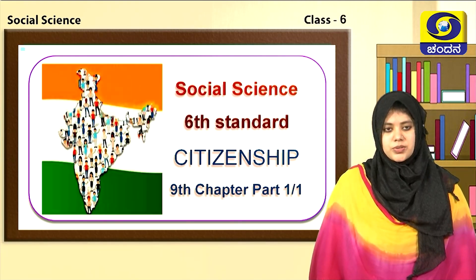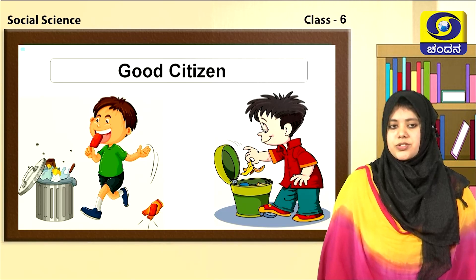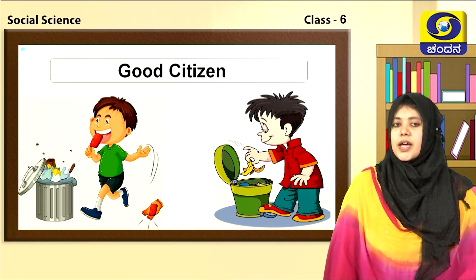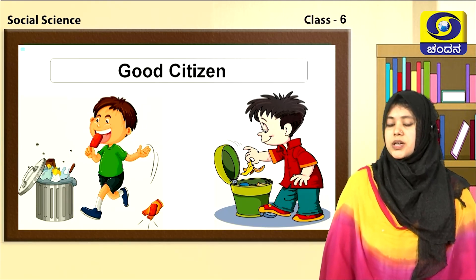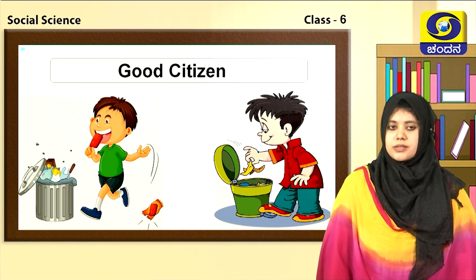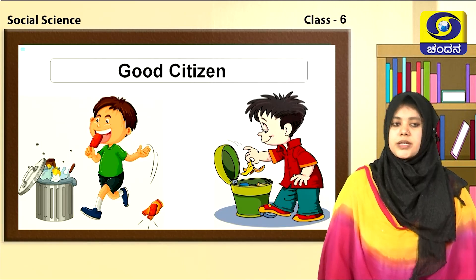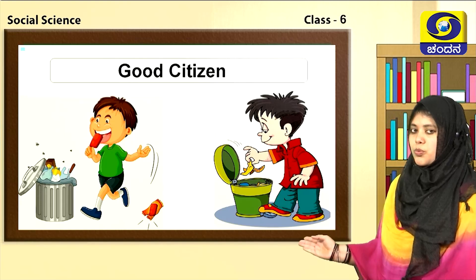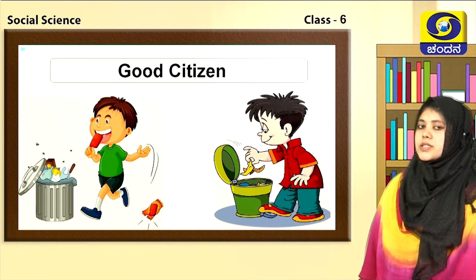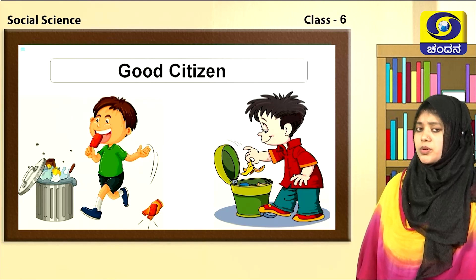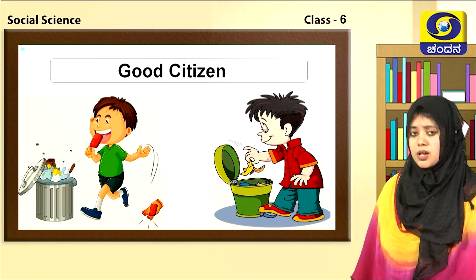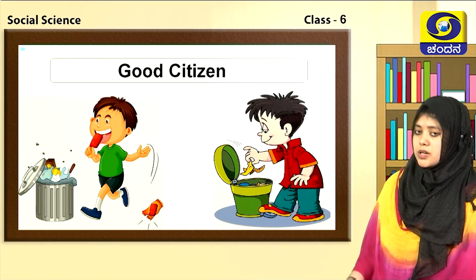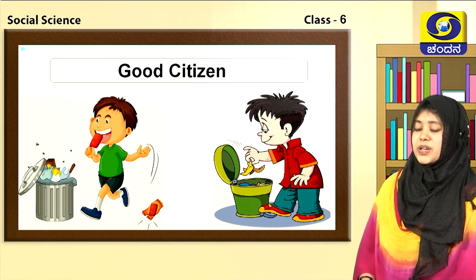Let us begin the class students. I will show you a few images. Your work is to compare them and tell me who can be considered as a better and a good citizen. You can see pictures of two boys. A boy who is eating an ice cream and throwing the wrapper on the road, or a boy who is putting the banana peel in a dustbin — whom do you think is the better citizen?